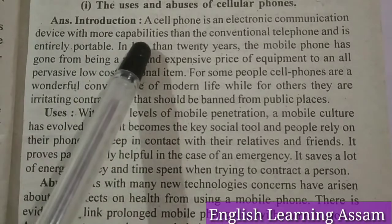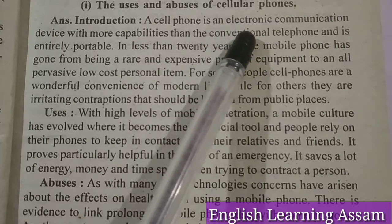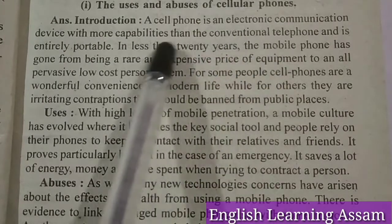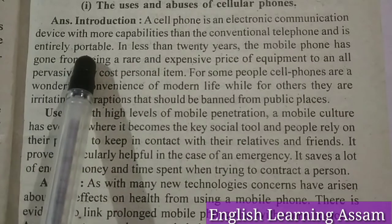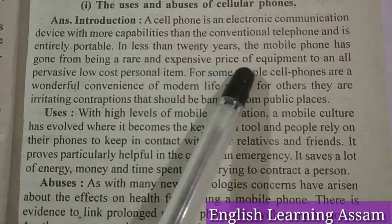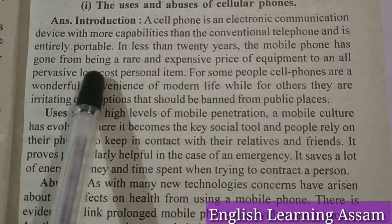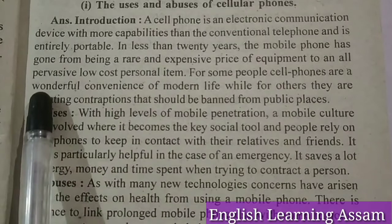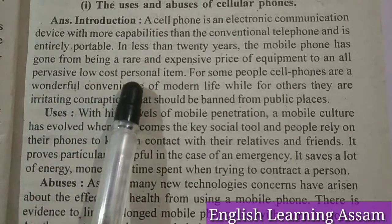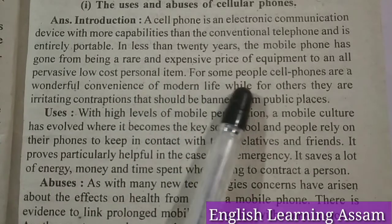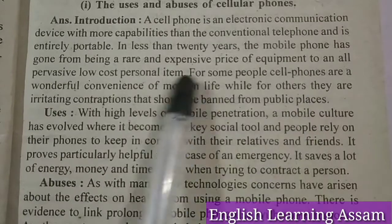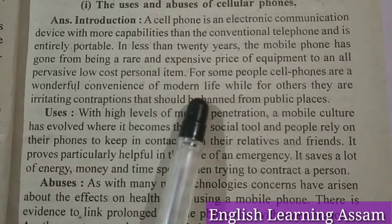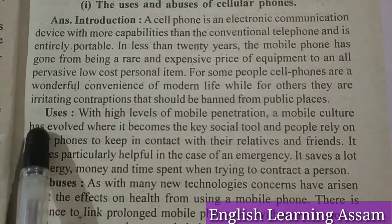Answer — Introduction: A cell phone is an electronic communication device with more capabilities than the conventional telephone and is entirely portable. In less than 20 years, the mobile phone has gone from being a rare and expensive piece of equipment to an all-pervasive, low-cost personal item. For some people cell phones are a wonderful convenience of modern life, while for others they are irritating contraptions that should be banned from public places.